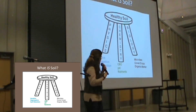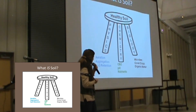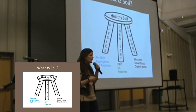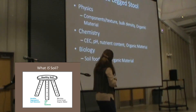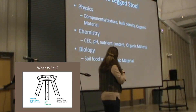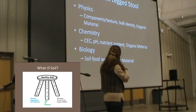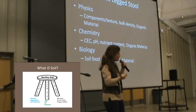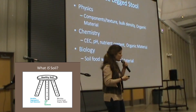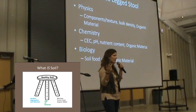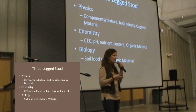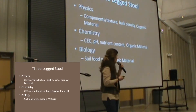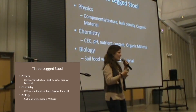Acidity versus alkalinity affects those available nutrients. On the biology side, we're going to talk about all the critters that are in the soil, as well as organic matter. Organic matter is going to come up over and over again. It's going to be a big part of soil structure, it's going to play a part in soil chemistry and nutrient availability, and it's going to make a big difference in the life of the soil.